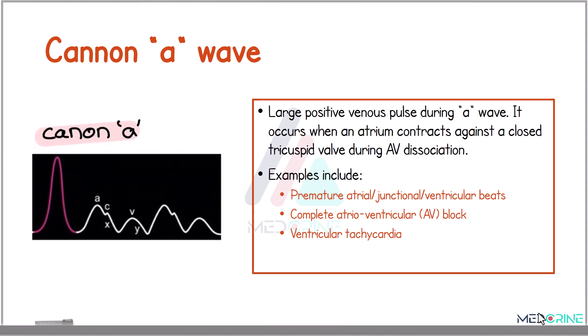The next abnormal wave is a cannon A wave — a prominent, large venous pulse occurring when the atrium contracts against a closed tricuspid valve. It is characteristic of atrioventricular dissociation, such as in complete heart block or ventricular tachycardia, as well as premature atrial or junctional beats.